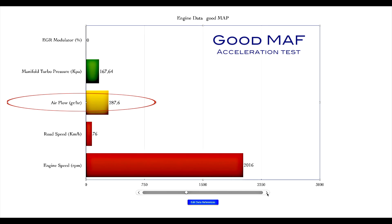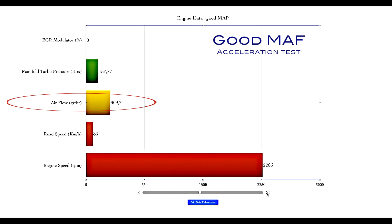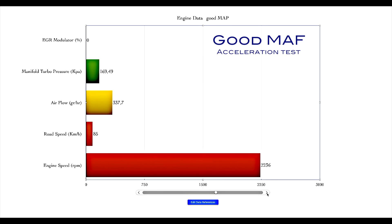Interestingly enough, you can see that the airflow in grams per hour is following the RPMs, and that's what it should be. The turbo pressure looks alright and now we are at cruising speed in fifth gear. In a few seconds I'm going to back off on the throttle and you will see the EGR modulator kicking in, recycling exhaust fumes back into the intake manifold.